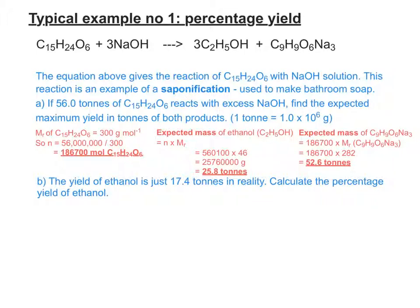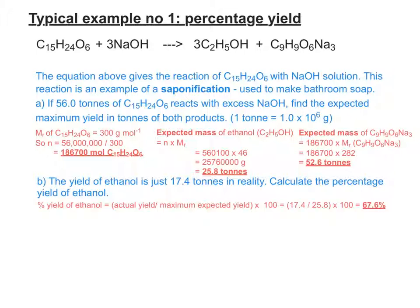Now they give you the actual amount you'd get as opposed to the amount you expect to get. You expect 25.8 tons, but in reality you only get 17.4 tons. What you've got to do is work out the percentage yield: divide the actual amount you get by the amount you expected to get, then express it as a percentage.